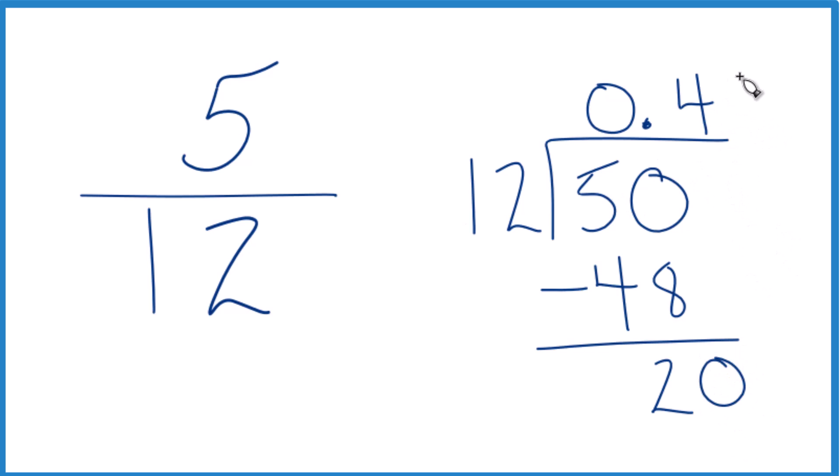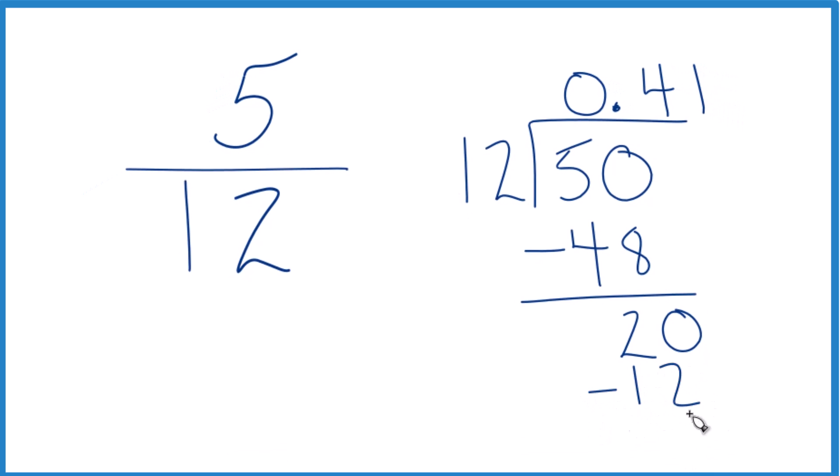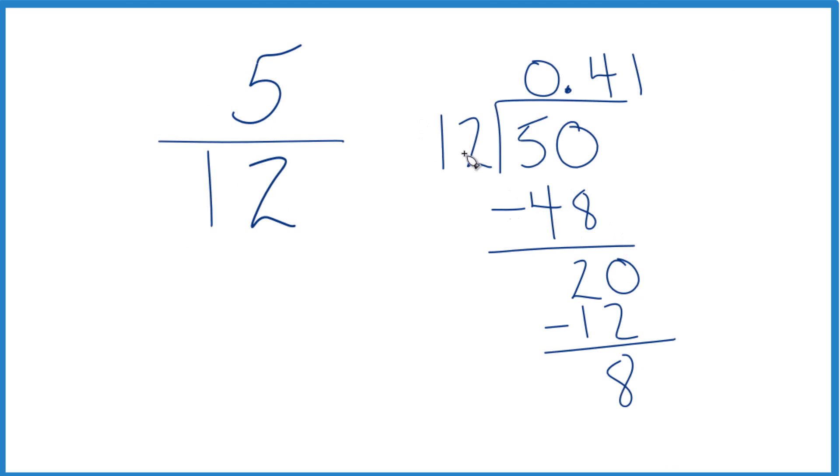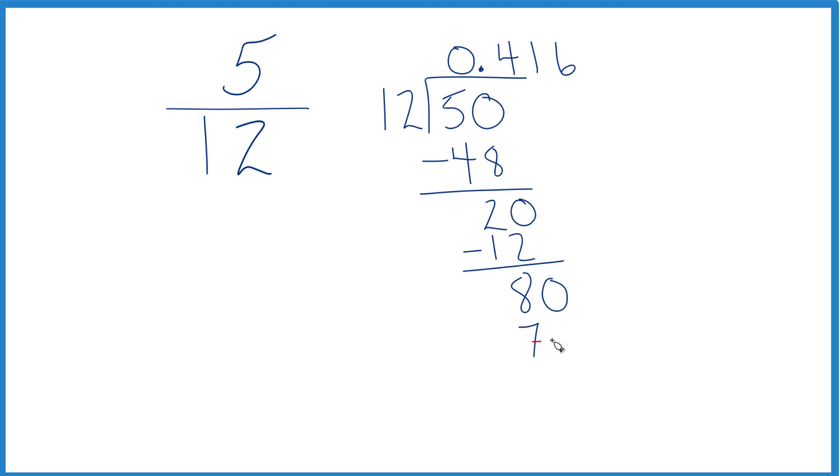So 1 times 12, that will give us 12. Subtract and we get 8. So 12 won't go into 8. Let's move over 1 and call it 80. Turns out 6 times 12, that would be 72. Subtract, we get 8.